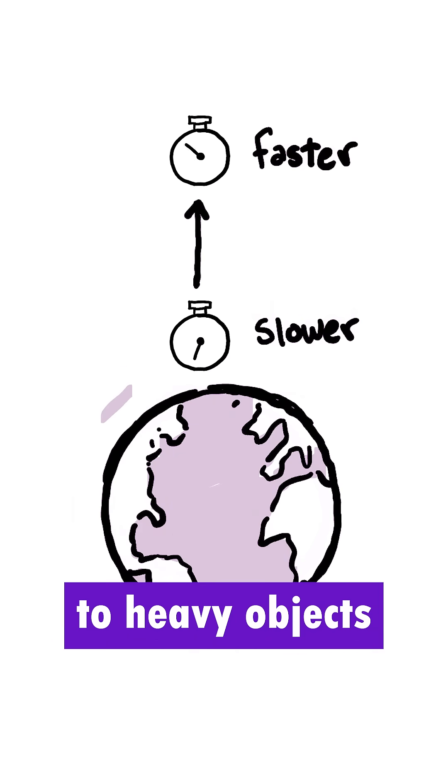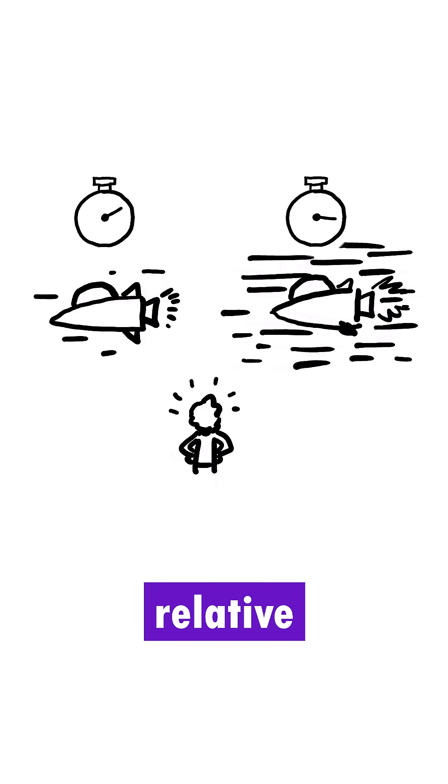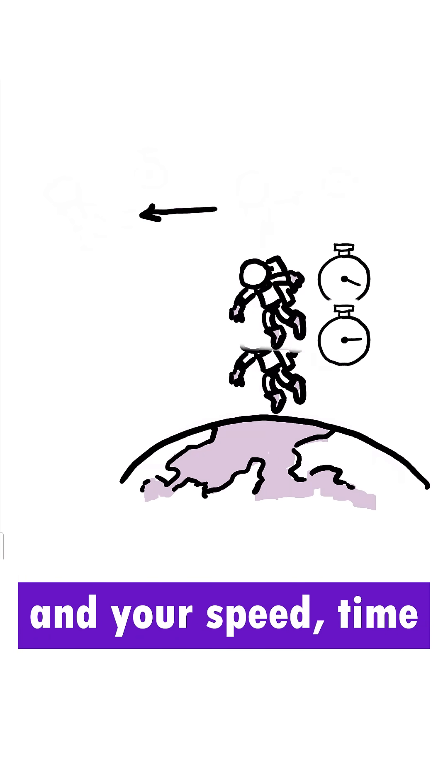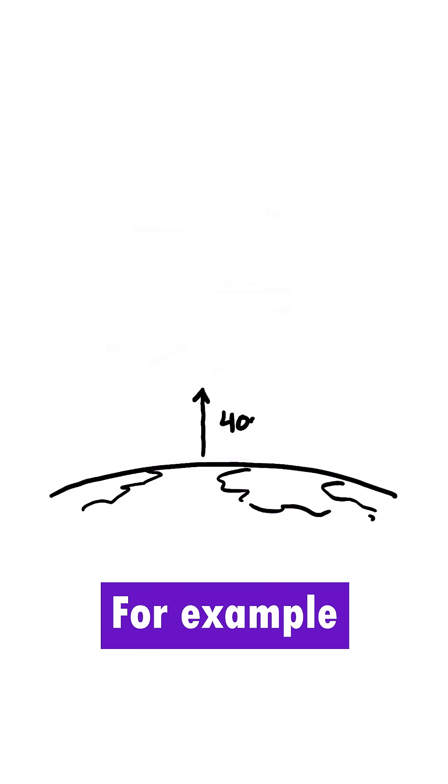According to General Relativity, time moves faster the further you are from heavy objects like the Earth. But time moves slower the faster you are moving relative to people on the ground. So depending on your orbit and your speed, time might move differently for you.